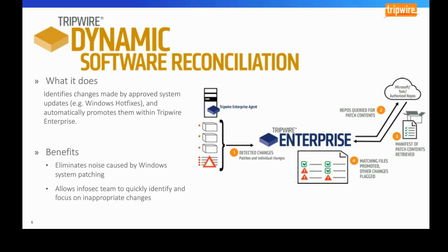At that time, all appropriate patches are deployed and tested to make sure everything is still working. That night, Tripwire Enterprise scans your environment and detects potentially thousands of changes scattered across your systems. The problem is there's no clear correlation between the changes observed and the hotfixes that were deployed — there's really no way to connect those dots.